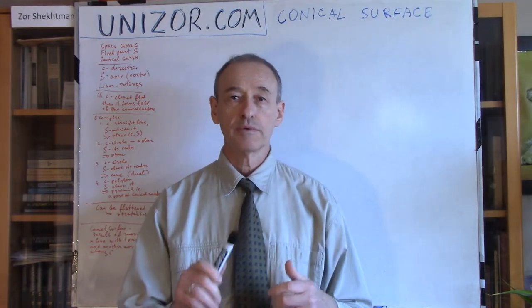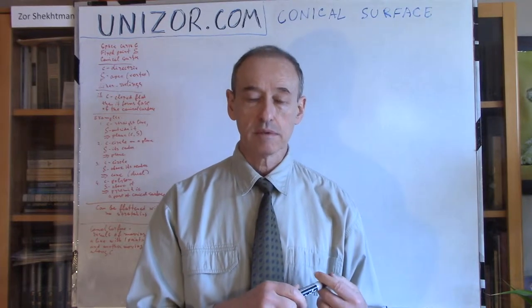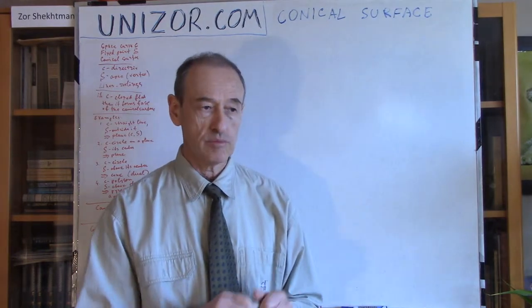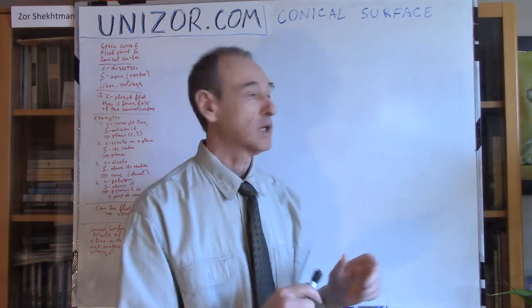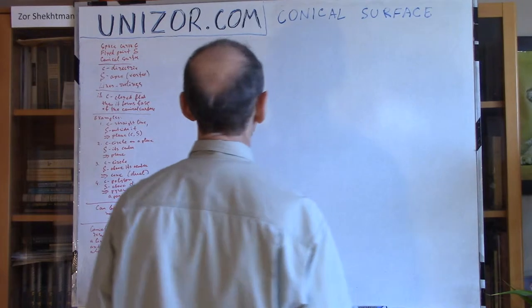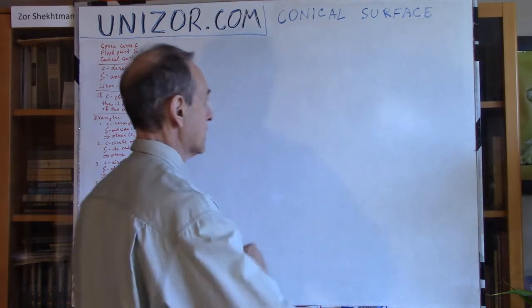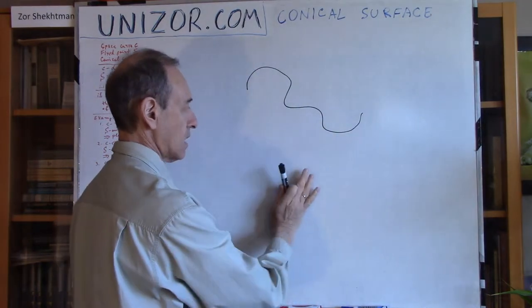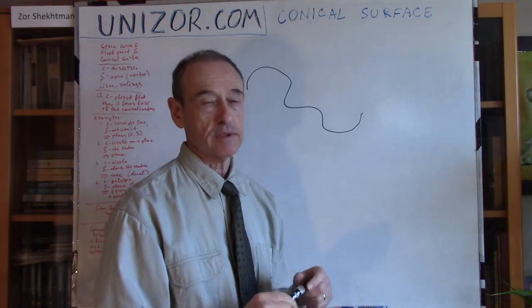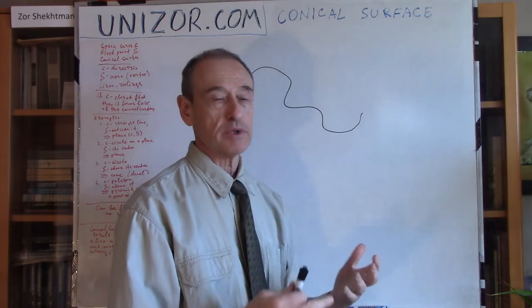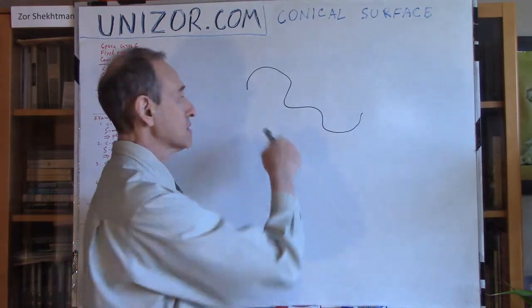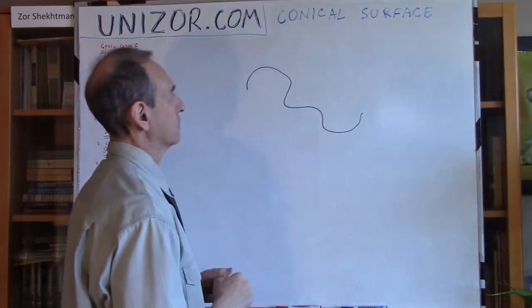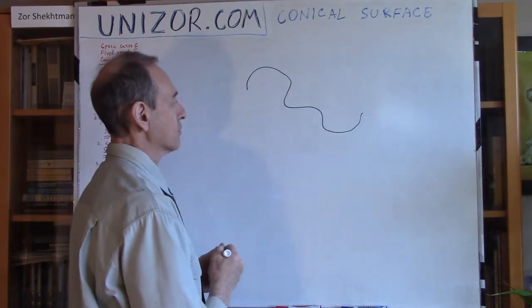If you are familiar with the lecture which explains what a cylindrical surface is, this will be very similar. I'm introducing the concept of a conical surface. So, what is a conical surface? Let's assume you have a space curve — whatever that curve is. I'm drawing this on the board, which means this particular curve is flat, but in solid geometry, a three-dimensional geometry, there is no such requirement. It can be any kind of curve in space — a helix, for instance. So, let's assume we have this curve in space. Let's call it C.